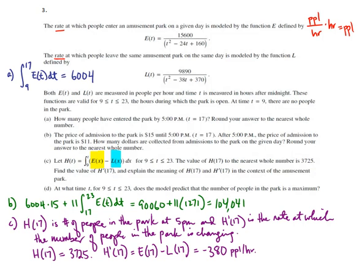And I've already explained above that h prime of 17 is the rate at which the number of people in the park is changing. Since it's negative, it means that more people are leaving than are entering, and the net number of people is going down in the park.